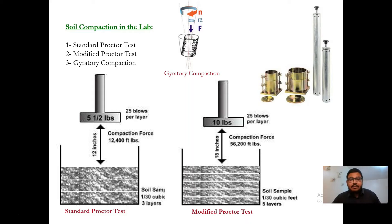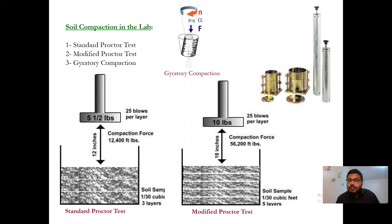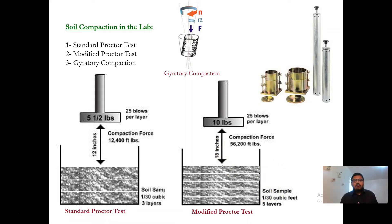The difference between the standard Proctor and modified Proctor test is straightforward. In the standard Proctor test we compact the soil in three layers, the fall height of the hammer is 12 inches, and the weight of the hammer is 5.5 pounds. For the modified Proctor test, the hammer weight is increased to 10 pounds, the fall height is 18 inches, and we compact the soil in five layers. So the modified Proctor test applies more energy than the standard Proctor test.